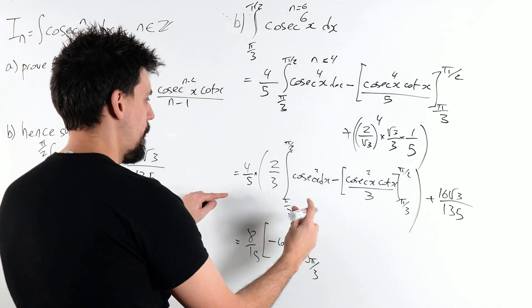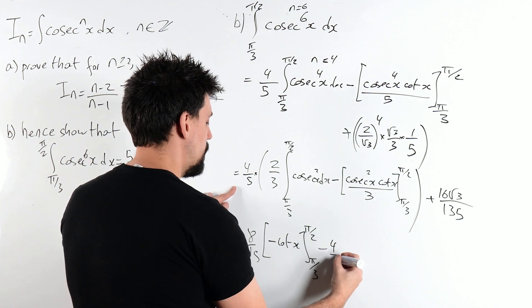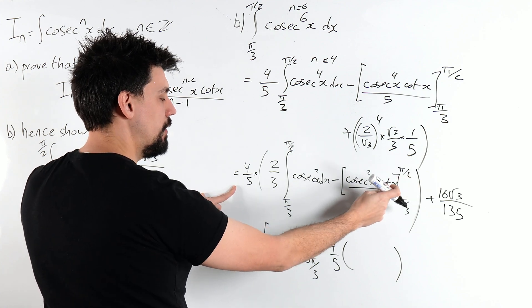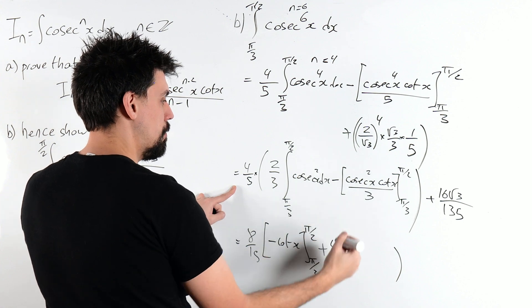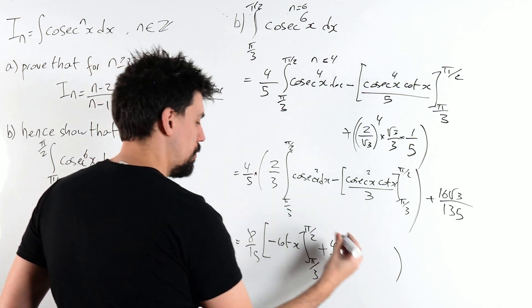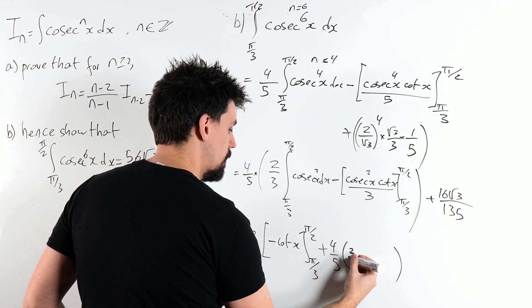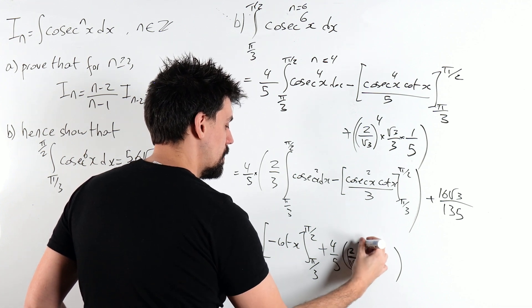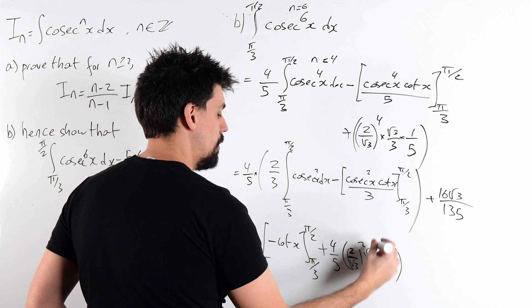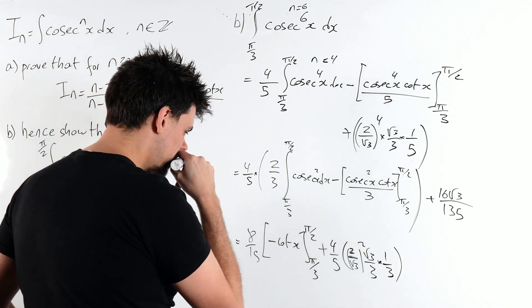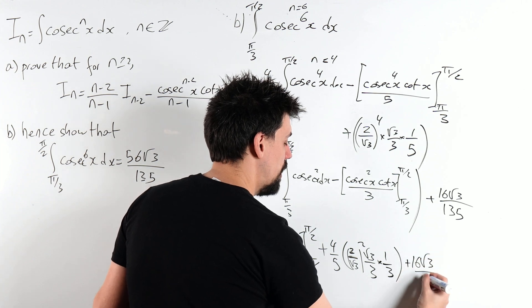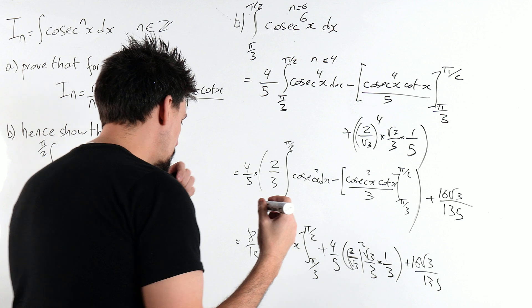All right. And then we get the minus 4 fifths of this plugged in. And again, cot of pi over 2 is 0. So that's all going to disappear. So minus then plus. Cosec of pi over 3 I've already said is 2 over root 3 squared. I've got the cot which is root 3 over 3. And I've got the divided by 3 times 1 over 3. And I've got the plus 16 root 3 over 135. This is absolutely wild.